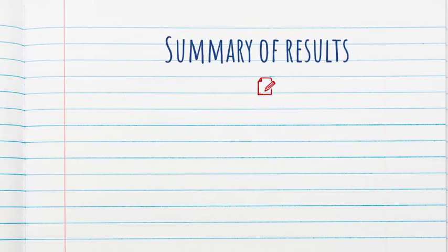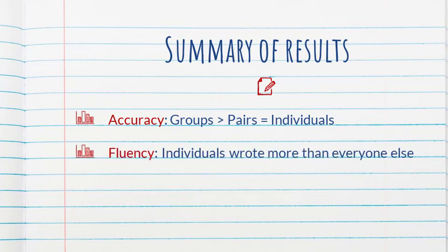Now let's look at the results for the written samples first. In terms of accuracy, groups did better than everybody else, and pairs and individuals did about the same. In terms of fluency, number of words, students working by themselves individually, they wrote more than everyone else. And in terms of complexity, everybody did about the same. So there were no differences in terms of complexity.